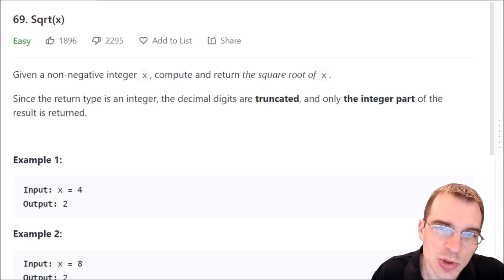Hello and welcome to Python programming practice. In this episode we are going to be covering LeetCode number 69 called square root x.